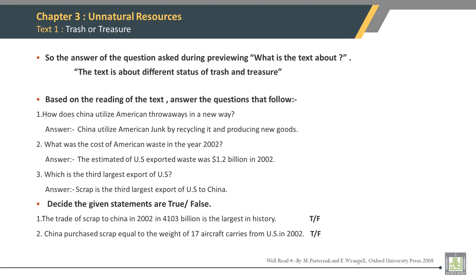So the answer to the question asked during previewing — what is the text about? The text is about the different status of trash and treasure. Based on the reading of the text, answer the questions that follow. How does China utilize American throwaways in a new way? China utilizes American junk by recycling it and producing new goods. What was the cost of American waste in the year 2002? The estimated cost of US exported waste was $1.2 billion in 2002. Which is the third largest export of the US? Scrap is the third largest export of the US to China.